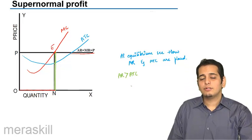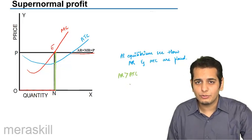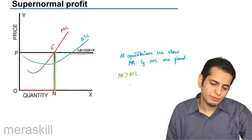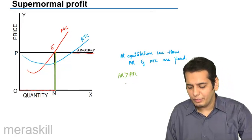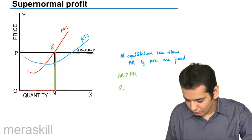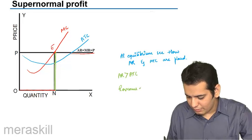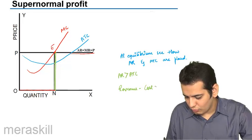Thus the firm would have a situation of supernormal profits. And what would be the amount of profit? We know that revenue minus cost equal to profit.